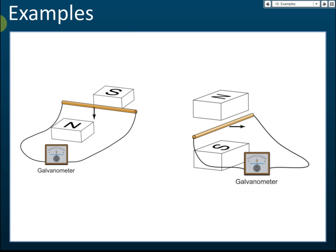I'd like you to try this example — label the direction of the current. You can say the current goes this way, or up, or down. Use Fleming's right hand rule to find the direction of the current.